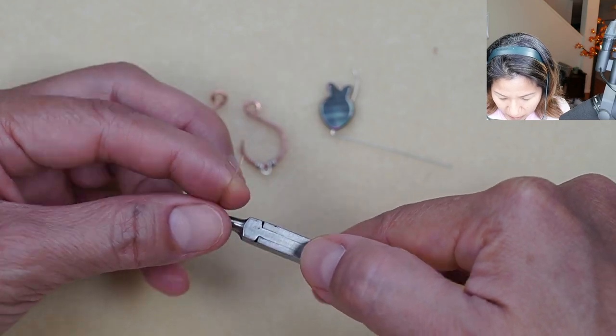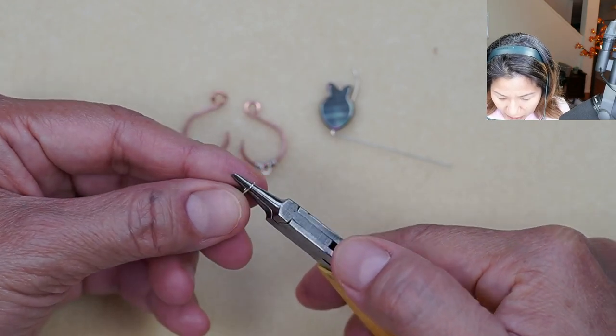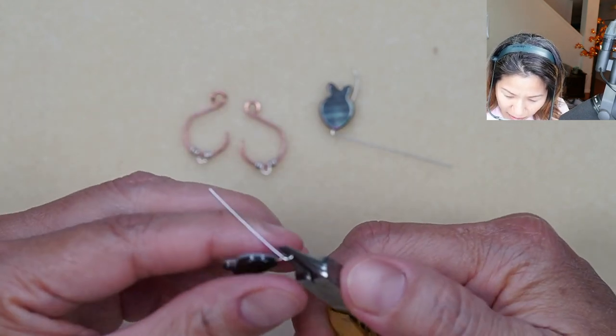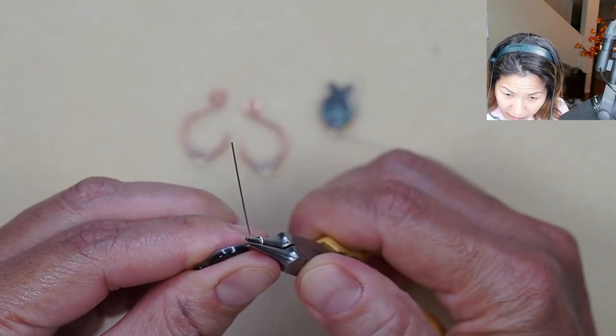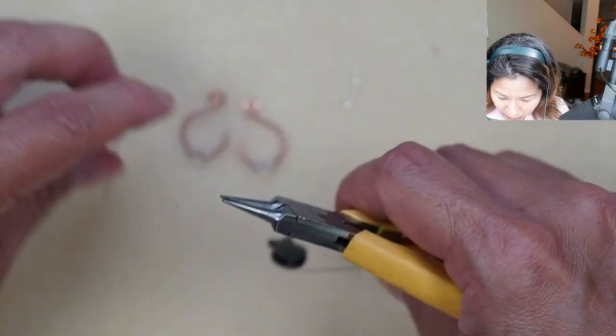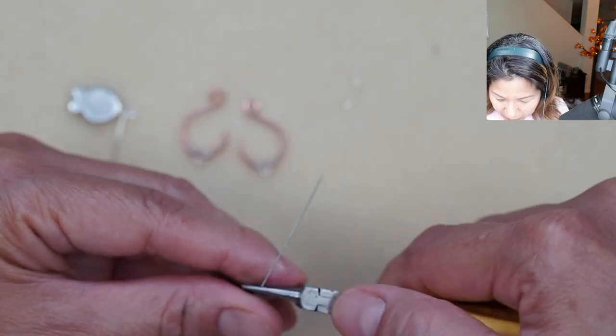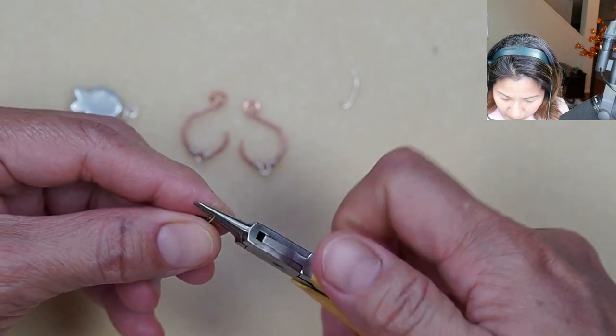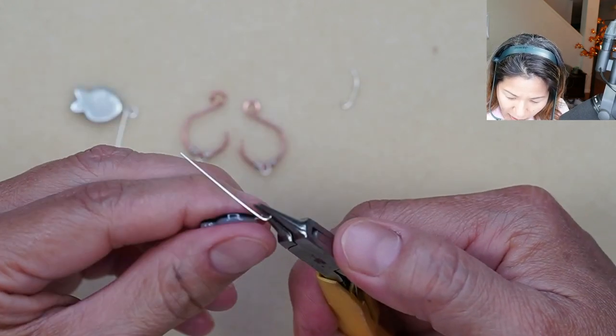With the round nose plier you're going to hold the wire and bring it up over and around to create your loop, switching to the bottom jaw to finish off that loop at a 90 degree angle. Repeat that on the other side and try to pinch it on the same part of your pliers so that both of your loops are the same size.